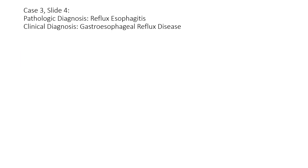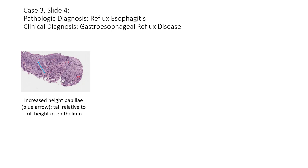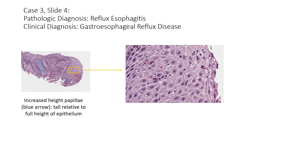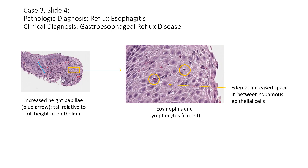Case 3, slide 4 is reflux esophagitis. In the biopsy, you can see the papillae are quite tall relative to the full height of the epithelium — this is called increased height papillae and is a common finding in esophagus being damaged by some agent. This results because the esophagus is attempting to repair itself in response to an insult. On the right, you can see eosinophils and lymphocytes, and there is edema visible as increased space between the squamous epithelial cells. The clinical correlate of pathologic reflux esophagitis is gastroesophageal reflux disease.